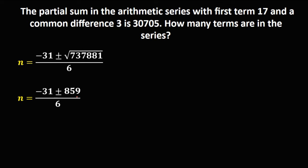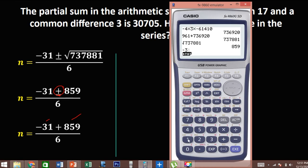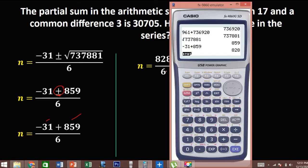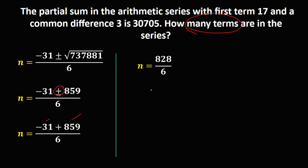Since we're looking for the number of terms, we drop the negative solution and take the positive. So n equals negative 31 plus 859 over 6. Negative 31 plus 859 is 828. Dividing 828 by 6 gives 138. Therefore, this arithmetic series has 138 terms.